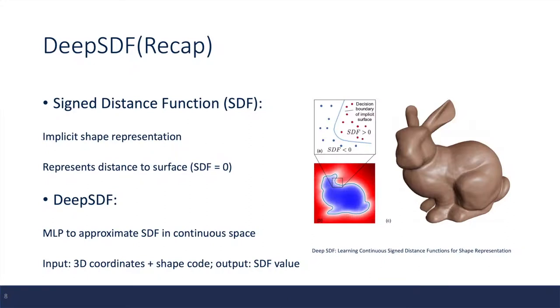In this setting, all samples inside the surface have negative values, and samples outside the surface have positive values. The value represents the distance to the surface. In Deep SDF, the authors try to approximate SDF in continuous space with a multilayer perceptron.